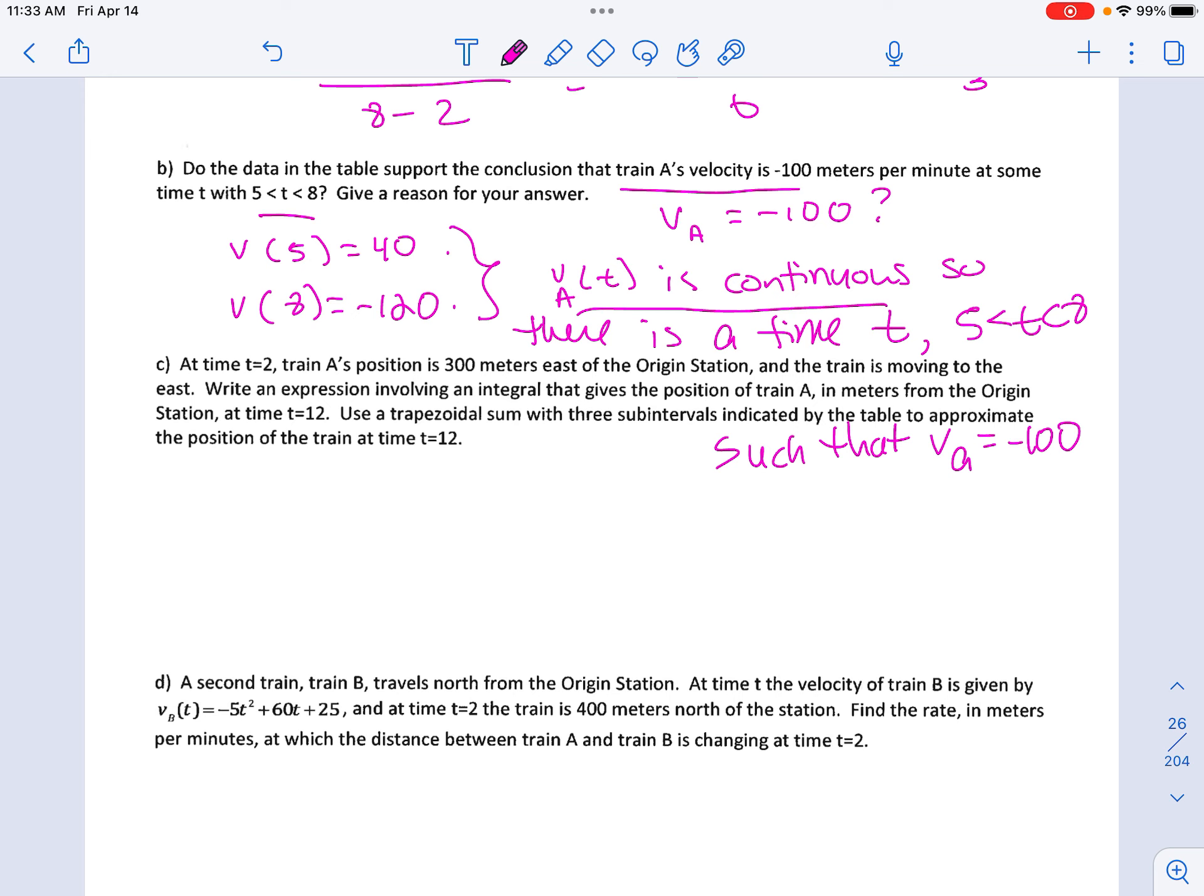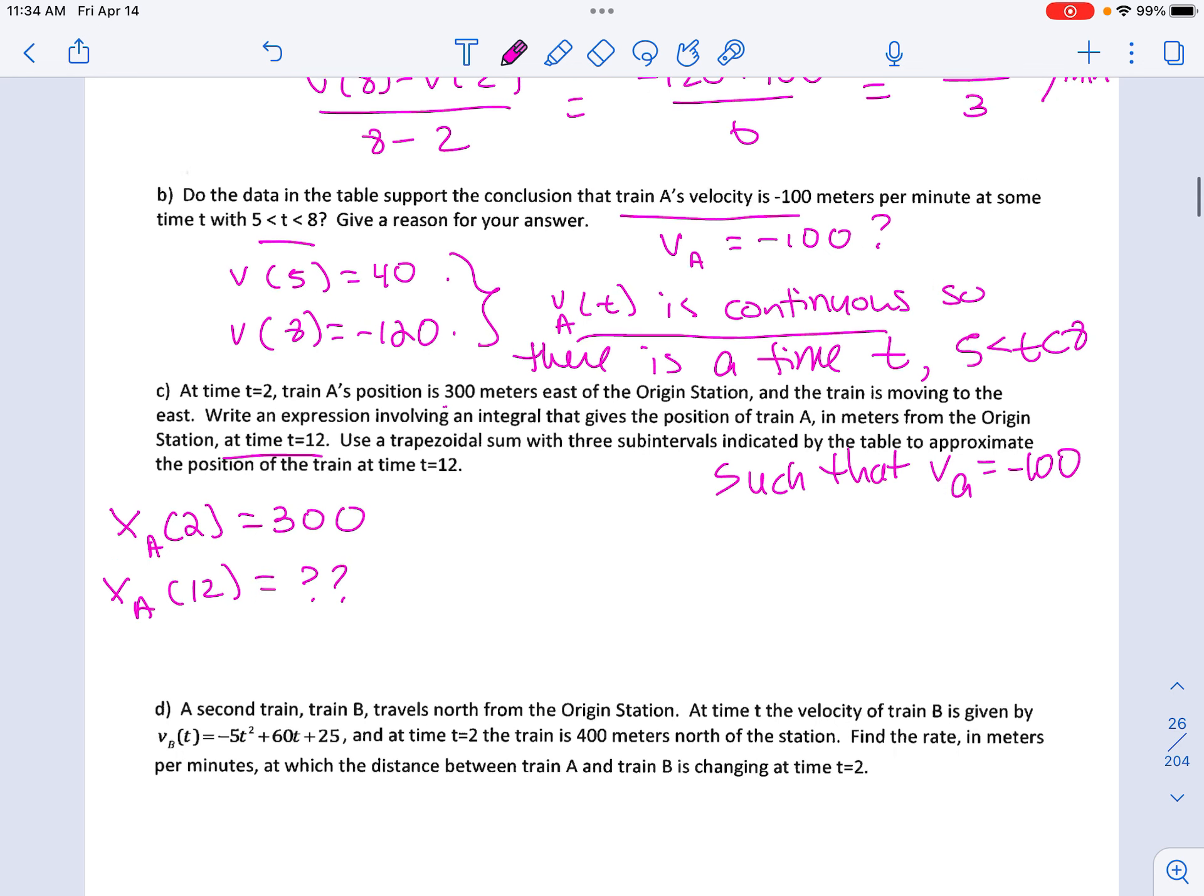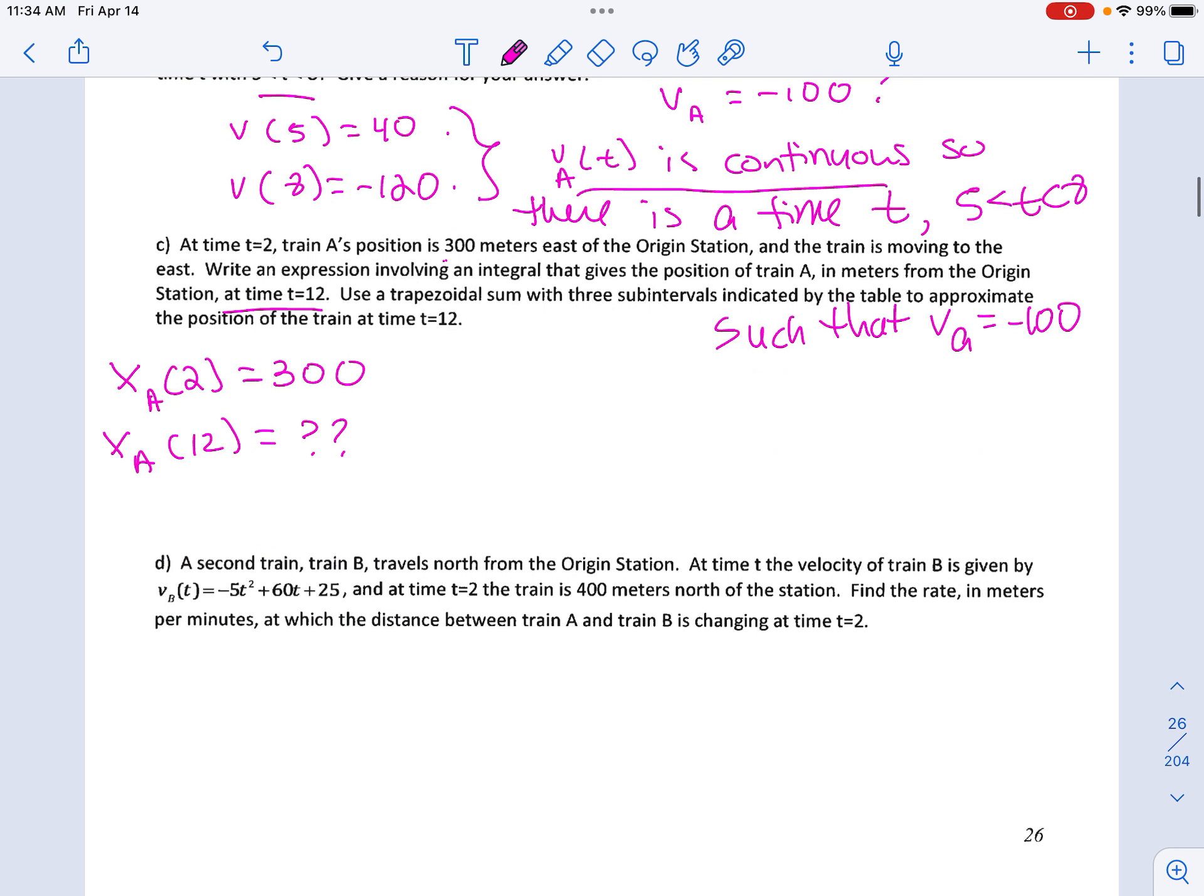Part C. At time 2, train A's position is 300 meters east of the origin. So the position of train A at time 2 is 300 meters. And the train is moving to the east. Write an expression involving an integral that gives us position of train A from the origin at time 12. So basically, I'm looking for the position at time 12. And we're going to use a trapezoidal sum to approximate the position. So first thing, I'm trying to get to position. The only thing I'm given is velocity. So you should be thinking, if I take the antiderivative of velocity, that will get me to position.